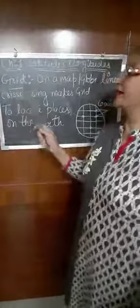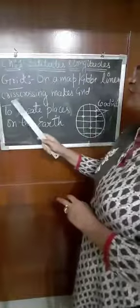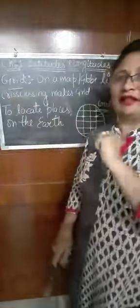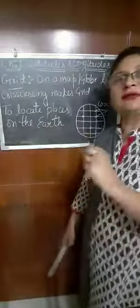The next part of the chapter is grid. Grid kya hai? On a map or a globe, the lines which are criss-crossing each other make a grid. Latitudes are horizontal lines and longitudes are vertical lines. Where these lines cross each other, they form a plus shape. The points where they cross are known as coordinates.